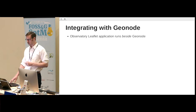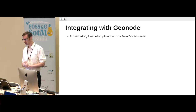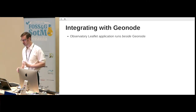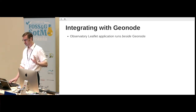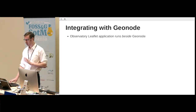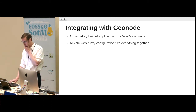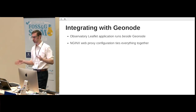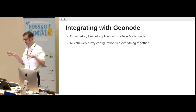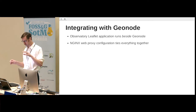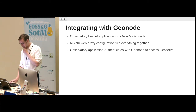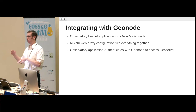What does it look like to integrate with GeoNode? You can build web mapping applications into GeoNode — that's how it's intended to be used, but that isn't how we use it. We took the prototype of the observatory application and ran it up beside GeoNode, which presented some challenges but also has advantages. We use an NGINX web proxy to tie everything together so it's all in the same domain. The observatory application authenticates with GeoNode to access GeoServer.